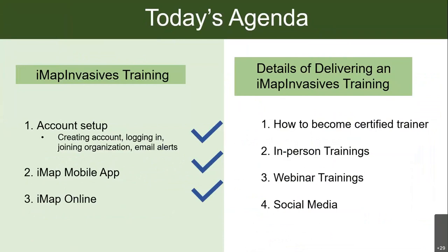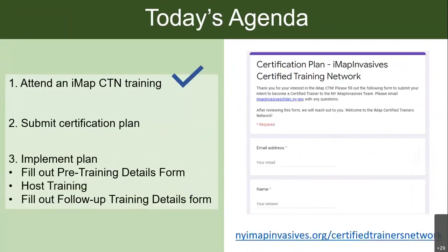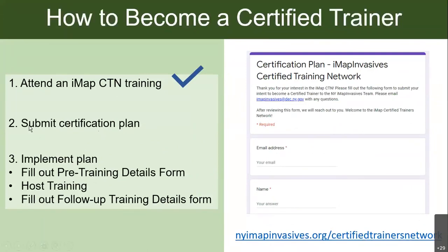With that, we've gone over the IMAP Invasive training and can shift to how certified trainers can become certified and deliver trainings themselves. It's a three-step process. Everyone listening right now is completing the first step: attending an initial IMAP CTN training — you've all got that done. The second step is submitting a certification plan, found at newyorkimapinvasive.org/certified-trainers-network, or via the main menu under Trainings > Certified Trainers Network. That form collects your contact information, why you're interested in the CTN, and details for your first planned training including intended audience.